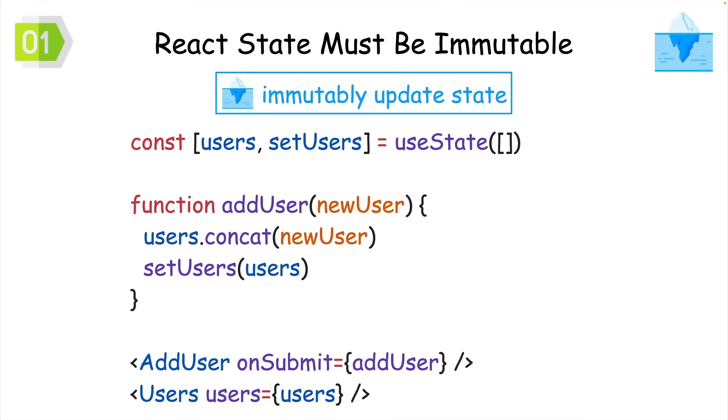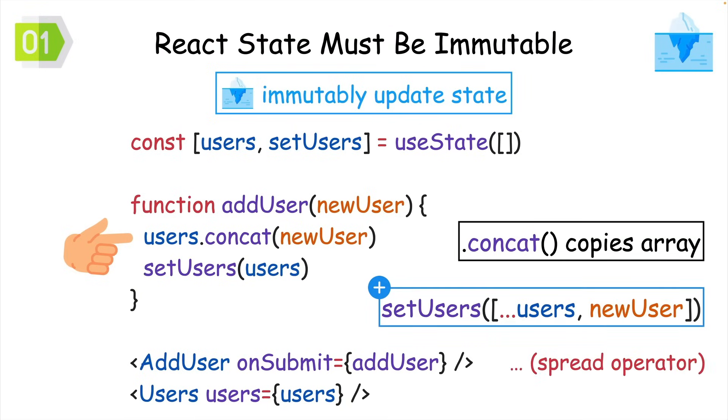To fix this, you have to update your state immutably by using a method that copies the original array before applying changes. You can also use the spread operator to copy the previous items into a new array.